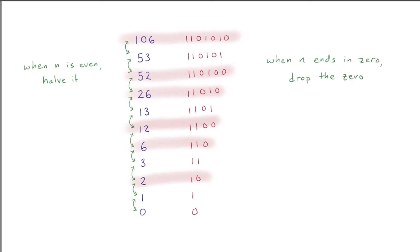When binary sees if my number is even, halve it, it thinks if my number ends in a zero, drop the zero. When it sees if my number is odd, subtract one, it thinks if my number ends in one, change the one to a zero. Seriously, binary can't get enough of this stuff.